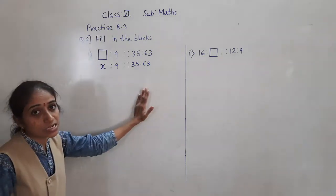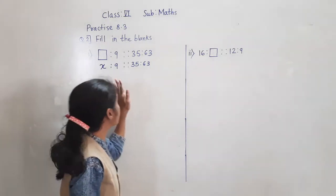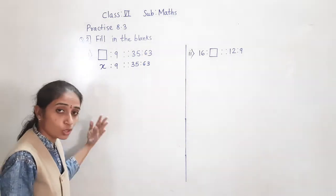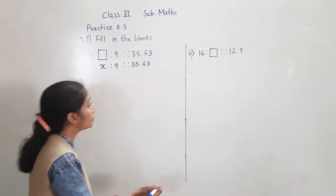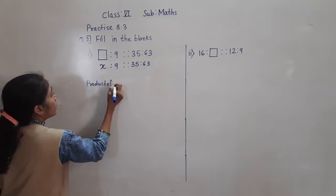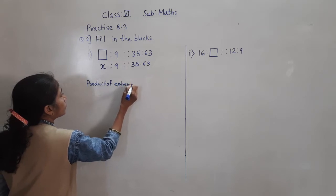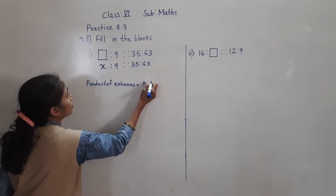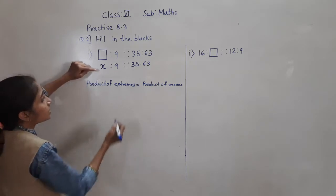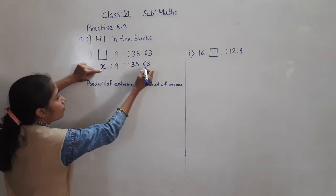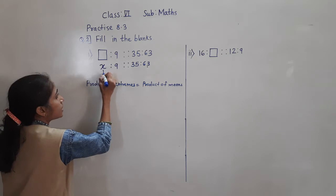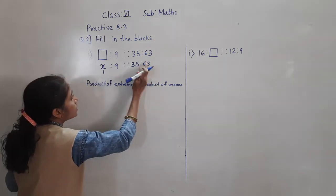Now you know: product of extremes is equal to product of means. See, this is a given proportion. So product of extremes is equal to product of means - we will use that. Now which are the extremes? The outer terms are called extremes and the inner terms are called means. So which are the outer terms? These are the outer terms, so these are the extremes.